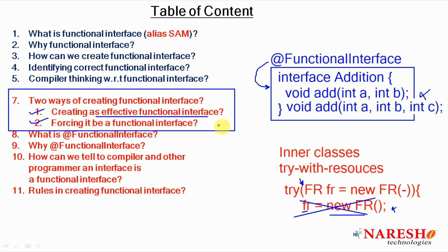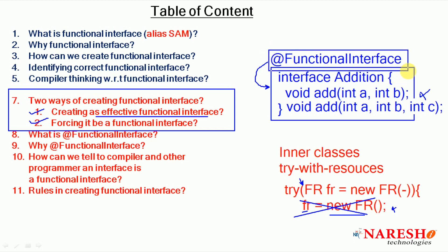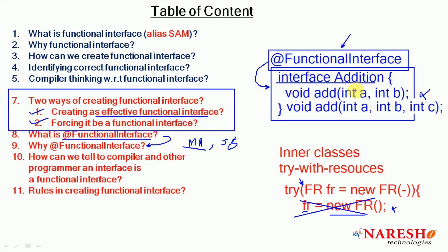If you want to create an effectively functional interface, just create an interface with only one abstract method. But if you want to force it to be a functional interface, add the annotation @FunctionalInterface. Once you add @FunctionalInterface, if you try to add one more abstract method in that interface, the compiler will start throwing an error because it is not a functional interface anymore.